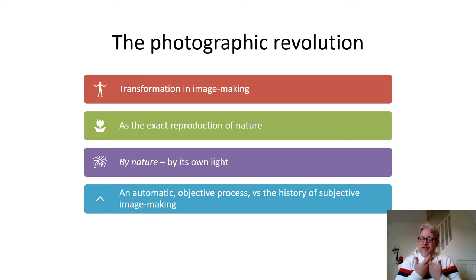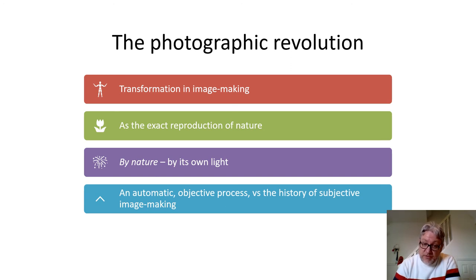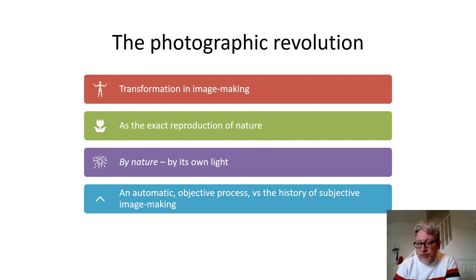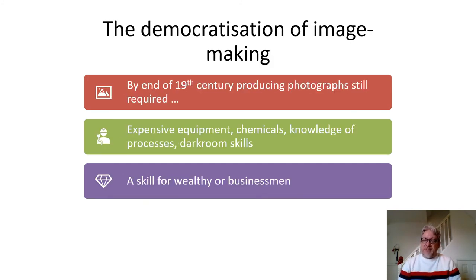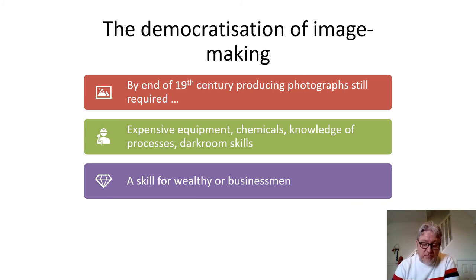You're starting to see exact reproductions of nature by nature because you use natural light to produce these — an automatic objective process versus the history we've had previously, which was subjective image making, where somebody would draw something and implant their own subjective view on what those events were. When we move towards photography, we start to see a much more objective process — albeit, we shouldn't argue that photographs are entirely objective either, because they're always taken from a particular subjective position. By the end of the 19th century, producing photographs still required expensive equipment, chemicals, knowledge of processes, and darkroom skills — a skill for the wealthy, not really democratised.